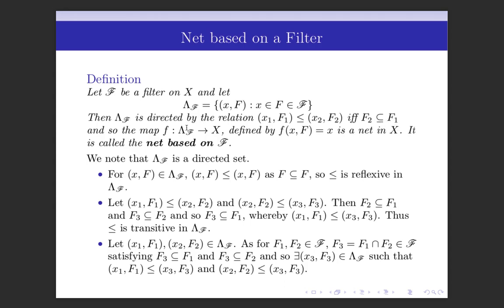Let us check that this is a directed set. For (x, F) in Λ(F), we have (x, F) ≤ (x, F) since F ⊆ F, so the relation is reflexive. If (x₁, F₁) ≤ (x₂, F₂) and (x₂, F₂) ≤ (x₃, F₃), then F₂ ⊆ F₁ and F₃ ⊆ F₂, so F₃ ⊆ F₁, whereby (x₁, F₁) ≤ (x₃, F₃). Thus the relation is transitive.